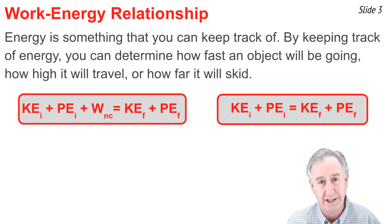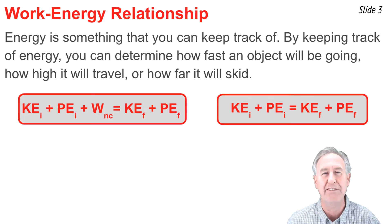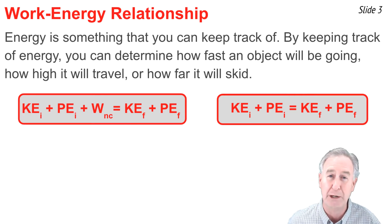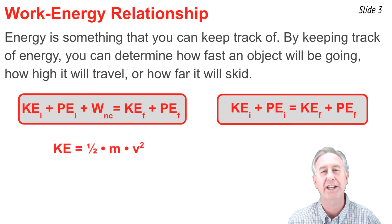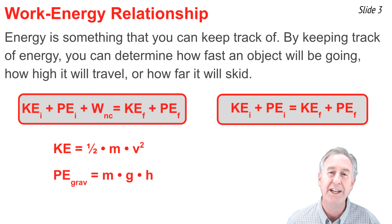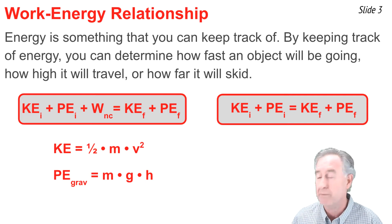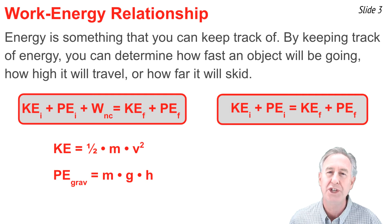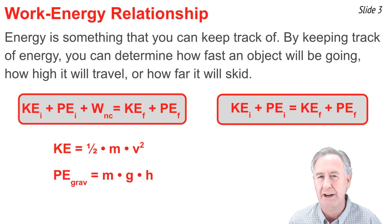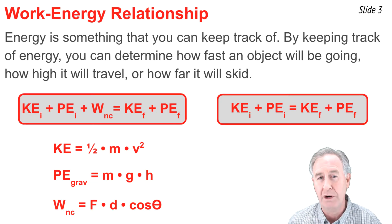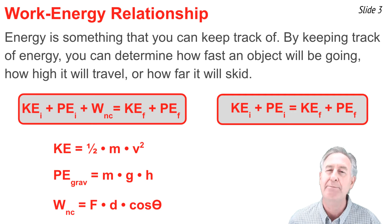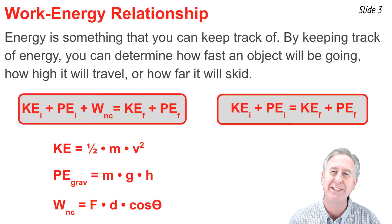Energy is something we can keep track of, and by keeping track of it, you can determine how fast an object is moving, how high it will go, and how far it will skid. We'll be using three equations: kinetic energy KE = ½mv²; gravitational potential energy PE_grav = mgh, where g = 9.8 N/kg on Earth; and work done by non-conservative forces W = F·d·cos(θ), where θ is the angle between the force and displacement vectors.